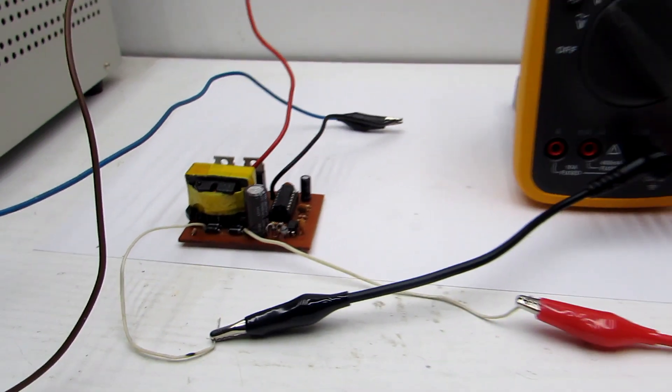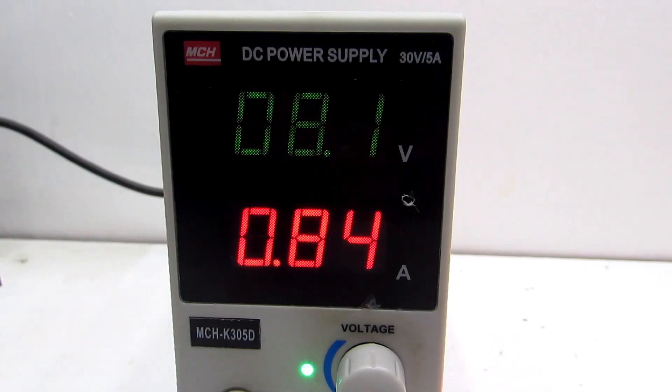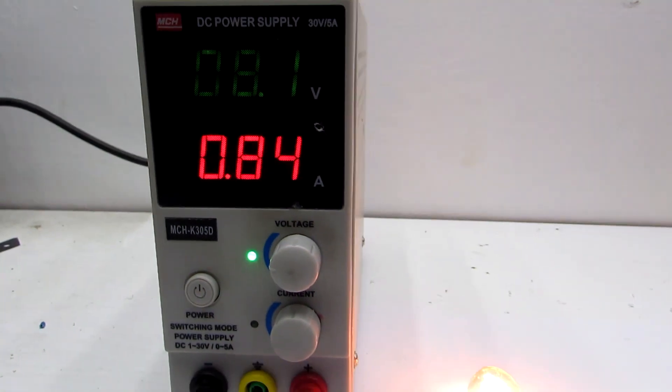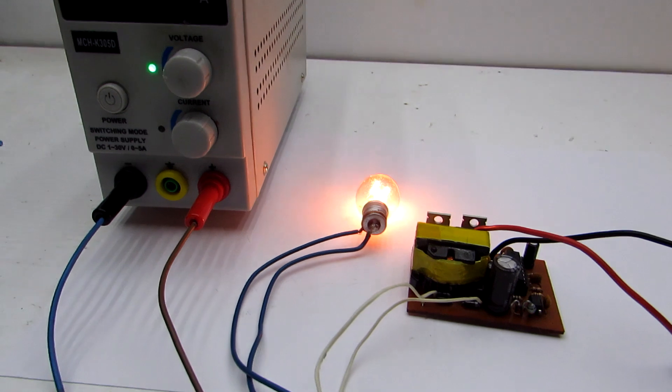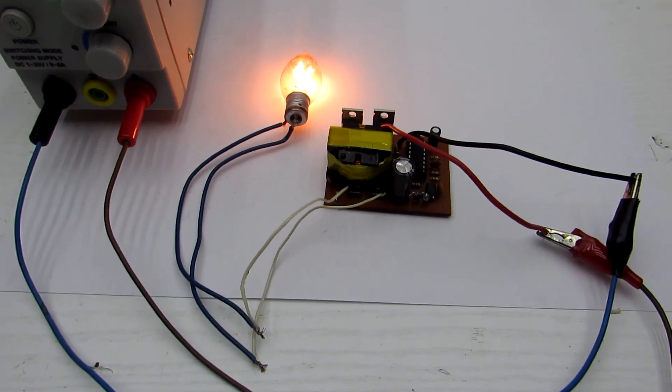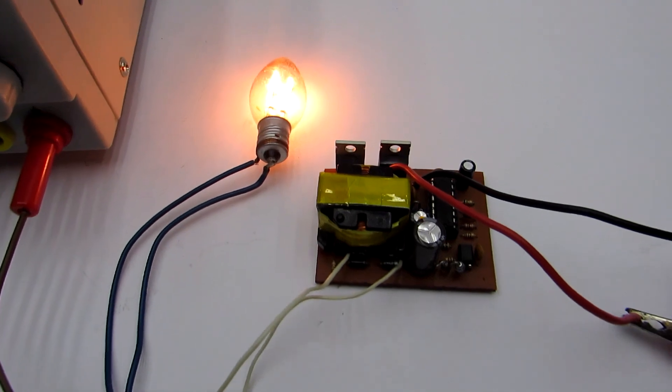The minimum supply voltage is 8 Volt. Therefore, such an inverter can greatly discharge your battery. So I advise you to monitor the voltage on battery, or supplement the circuit with a simple protection from low voltage. Such addition I will show in the next video, when I will collect the UPS.